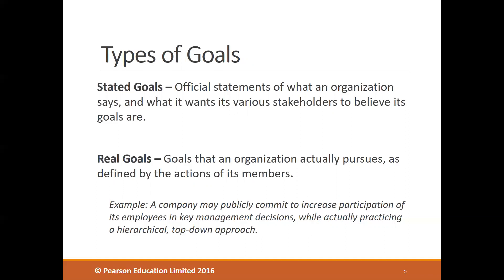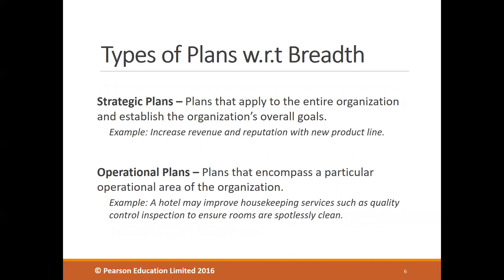However, stated goals are often vague or ambiguous and probably better represent management's public image rather than what the organization is actually trying to accomplish. Real goals are those that an organization actually pursues, and to know them, we need to observe what organizational members are actually doing. For example, a company may publicly commit to increasing employee participation in key management decisions while actually practicing a hierarchical top-down approach where top managers make decisions and lower-level managers execute them.